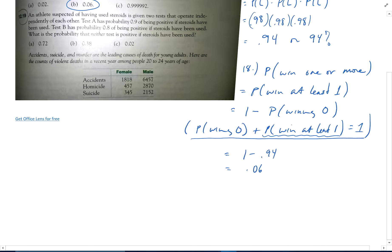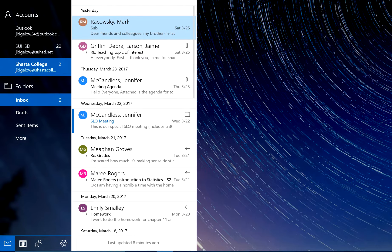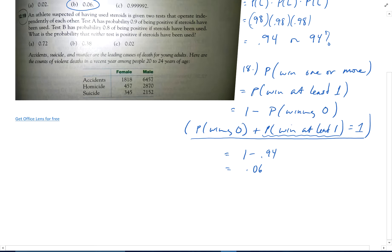And number 19, an athlete suspected of having used steroids is given two tests that operate independently of each other. Test A has a probability of 0.9 of being positive if steroids have been used. Test B has a probability of 0.8 of being positive if steroids have been used. What's the probability that neither test is positive if steroids have been used?